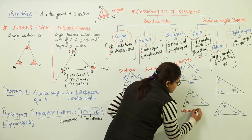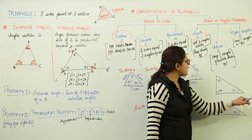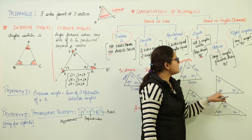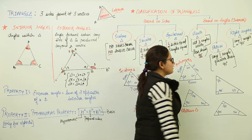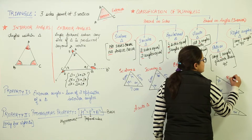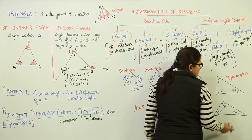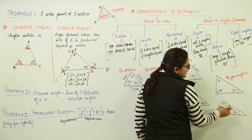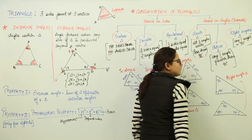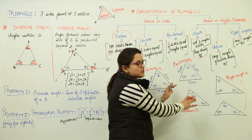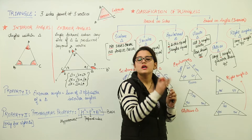A triangle having one angle equal to 90 degrees is termed a right-angled triangle. Similarly, another triangle also having one angle as 90 degrees can also be considered a right-angled triangle. That was the classification of triangles based on sides and based on interior angles.